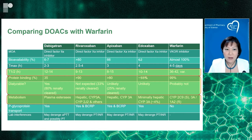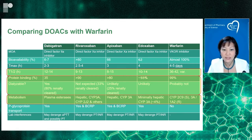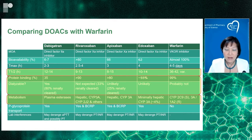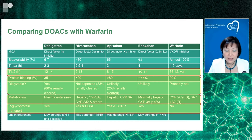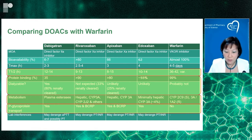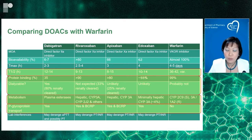Metabolism-wise, rivaroxaban and apixaban are heavily metabolized by CYP enzymes such as CYP3A4, and for rivaroxaban also CYP2J2. Edoxaban and dabigatran are not as dependent on CYP enzymes, so you don't expect as many drug-drug interactions related to CYP3A4. Importantly, P-glycoprotein transport is an important consideration for all DOACs — not so much for warfarin — presenting new opportunities to watch for drug-drug interactions involving PGP proteins.